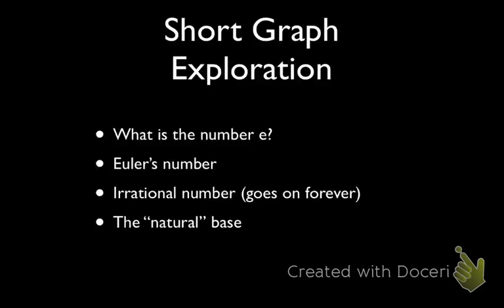The number E is called Euler's number. It's not pronounced Euler, it's pronounced Euler. It's an irrational number. E is like pi. It goes on forever.